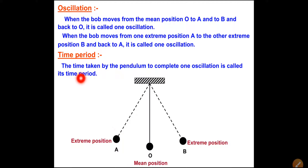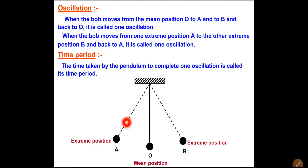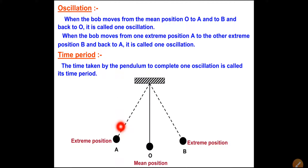The time taken by the pendulum to complete one oscillation is called the time period. When the bob moves from A to B and back to A, however much time is required to complete this one oscillation is called the time period - maybe a few seconds. So the time period is the time taken by the pendulum to complete one oscillation.